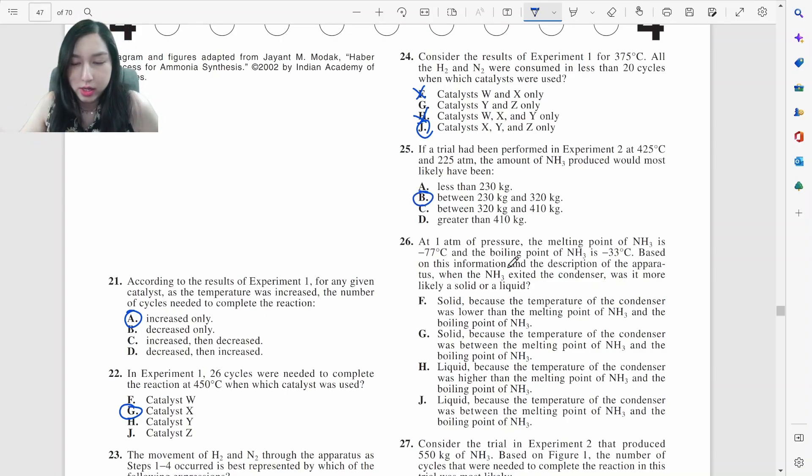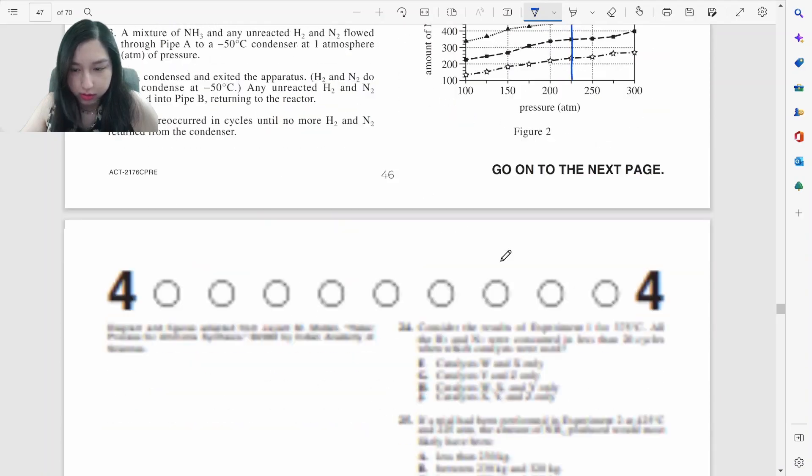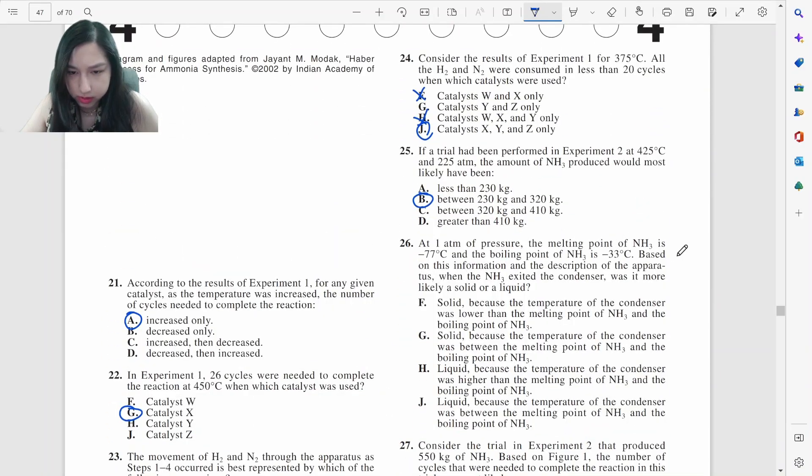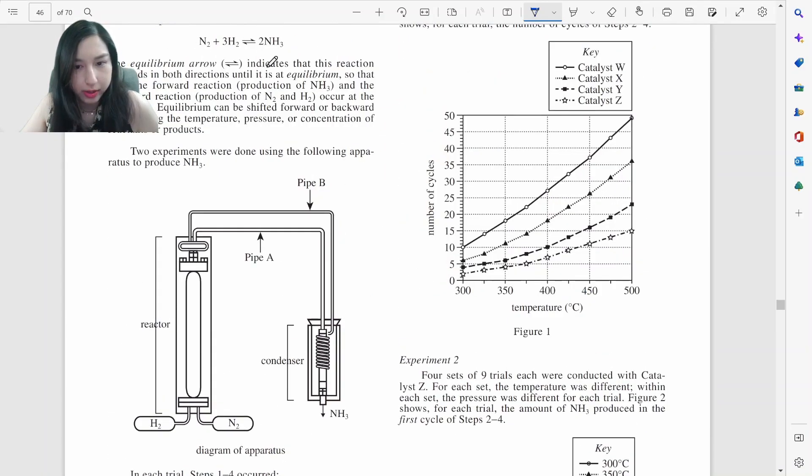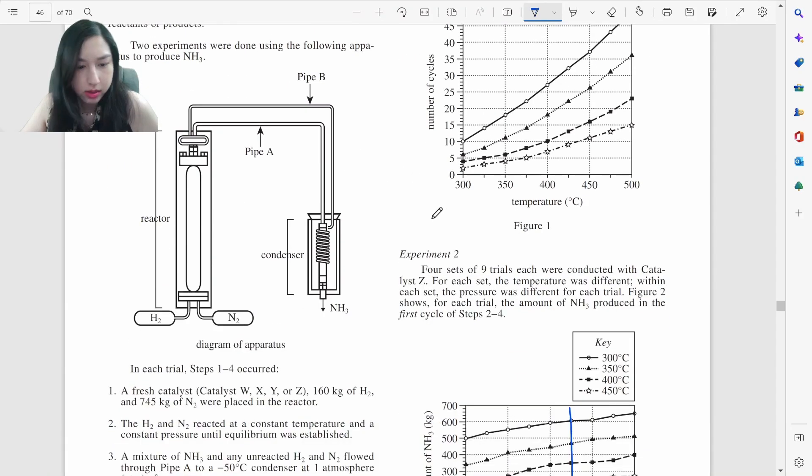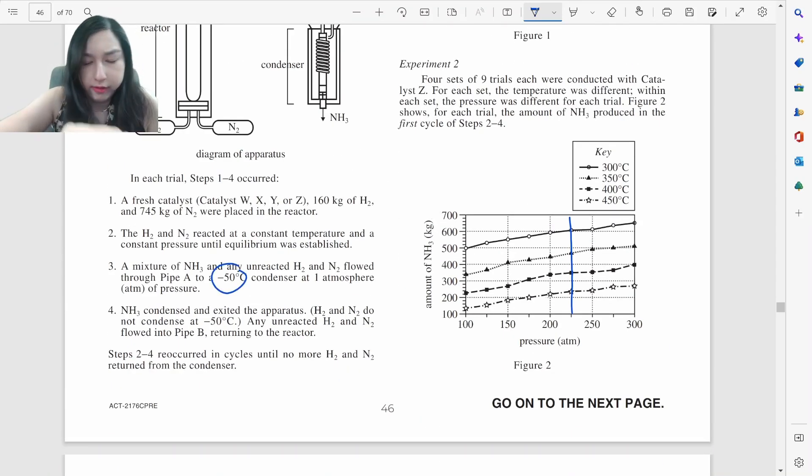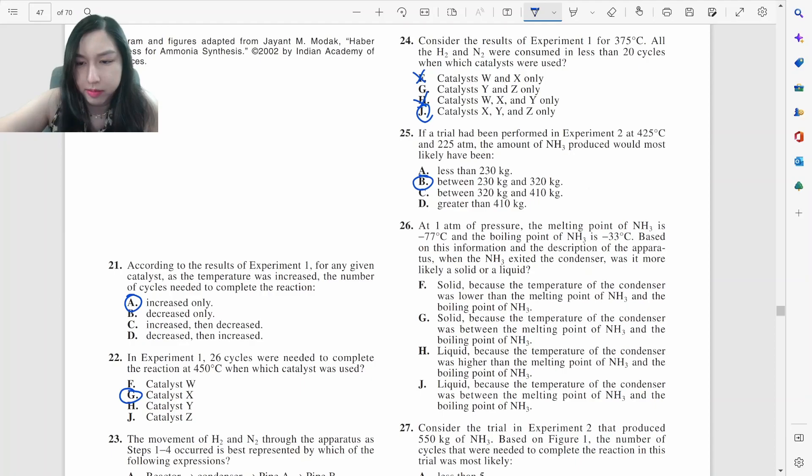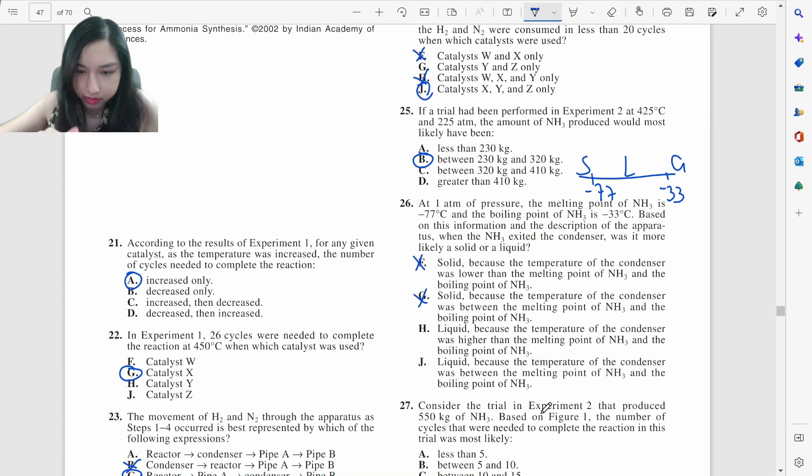At 1 atm of pressure, the melting point is this, and the boiling point is negative 33. It's going to be a solid or liquid. I guess they must be. So we've got negative 77, negative 33, solid, liquid, gas. So it's going to be a liquid because it's in between negative 77 and negative 33. It's going to be J.